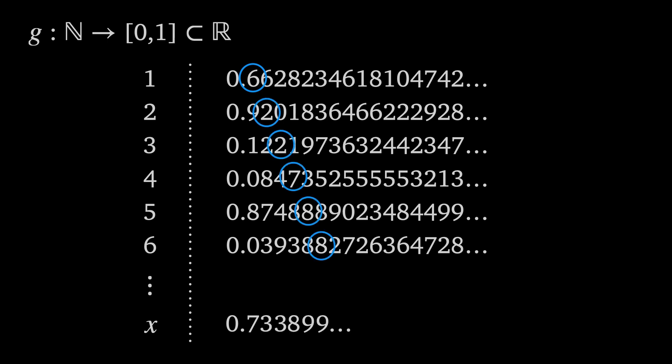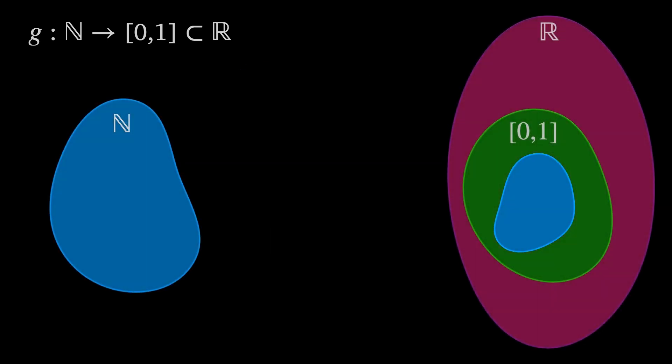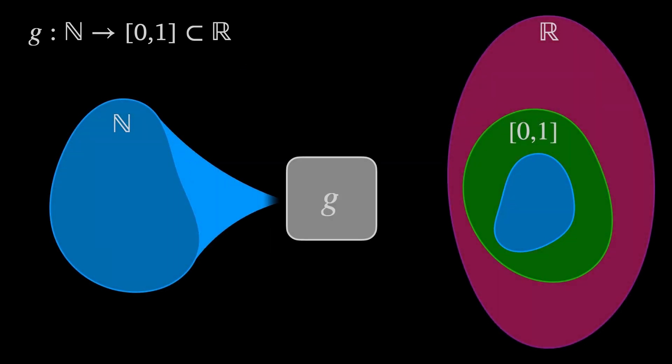We can construct a new number x by taking the nth significant figure of the nth real number in the list and adding 1. This then forms the nth significant figure of x. 6 becomes 7, 2 becomes 3, etc. If we encounter a 9, we change it to a 0. Since x differs at at least one decimal place from all the real numbers in the list, then we can't have found every one of them. So whatever this function g is, we've found an element x in the co-domain of g which isn't in the image of g.